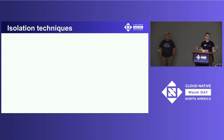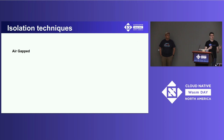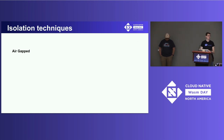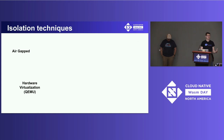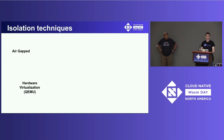Looking at isolation techniques in our domain, we have a spectrum. One extreme is air-gapped — you literally don't trust anybody outside your compute space, and you make a compromise on ease of delivery by having to physically be next to the machine to deploy it, but that comes with strong security guarantees. Hardware virtualization kicked off cloud computing: you no longer needed to plug in a computer or access a data center — you could use an API to create an instance of compute.